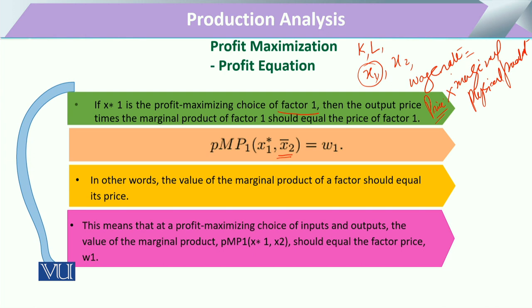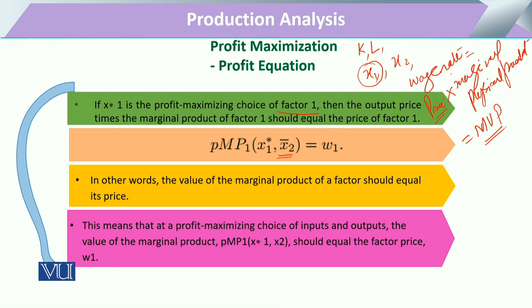The marginal value product provides the benchmark: it must equal the wage rate. If labor produces more output per unit, the wage will be greater. If the nature of output is such that its market price is greater, then the wage will also be greater. So keeping in view this formula, the marginal physical product multiplied by the output price should equal w1.